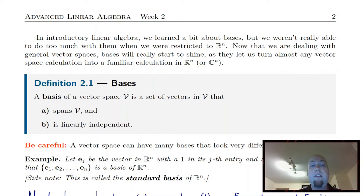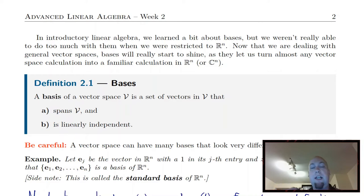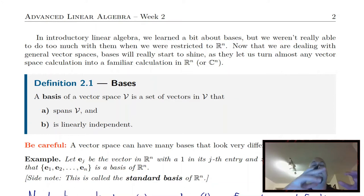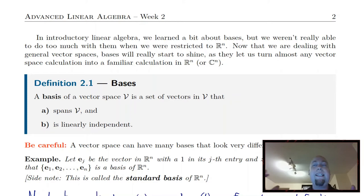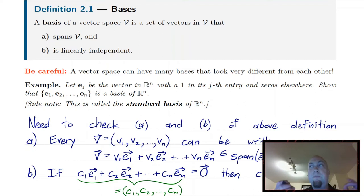So let's define what a basis is. All it is is a set of vectors that has two properties that sort of pull at each other. For it to be a basis, the set's got to span whatever vector space you're talking about, but also the set's got to be linearly independent. The spanning property tells you there are enough vectors in the set — the set is big enough that it contains all the information about the vector space; everything in the vector space can be built out of members of your basis via linear combinations. But the linear independence property tells you the basis has to be small enough that it doesn't contain any redundancies. So spanning says the set's got to be big, whereas linear independence says the set's got to be small — they're sort of pulling at each other.